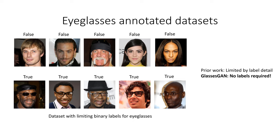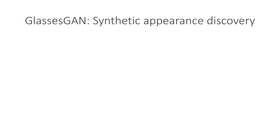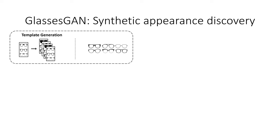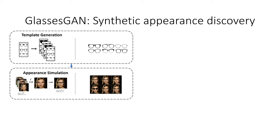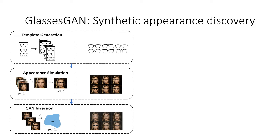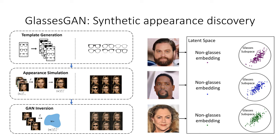GlassesGAN, on the other hand, requires no labeled data because of our novel synthetic appearance discovery and targeted subspace modeling methods. The synthetic appearance discovery method samples the eyeglasses subspace of the StyleGAN2 latent space in three steps. First, we synthesize a variety of glasses templates. Second, we dynamically apply those templates to a large dataset of facial images. Last, we invert our augmented images into the latent space of the StyleGAN2 generator. The result of this process is a sampling of the glasses subspace for each person in our dataset.